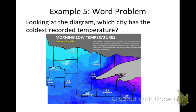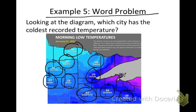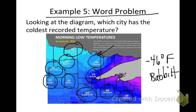Now we have some word problems. Example 5: word problem — looking at the diagram, which city has the coldest recorded temperature? I see temperatures from Minnesota and Wisconsin — International Falls, Big Fork, Cass Lake, Leder, Atkin, Grantsburg, Duluth, Babbitt, Hayward, and Phillips. I want to look at the number that's the greatest negative — and it looks like it's negative 46 degrees Fahrenheit, and that's in Babbitt.